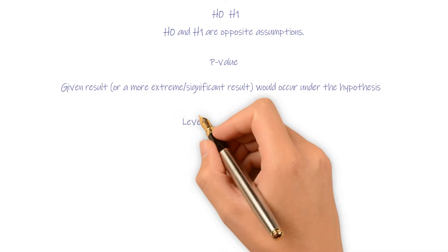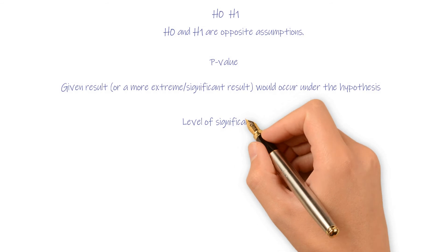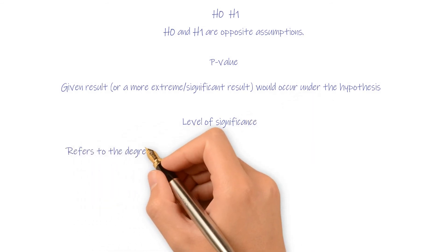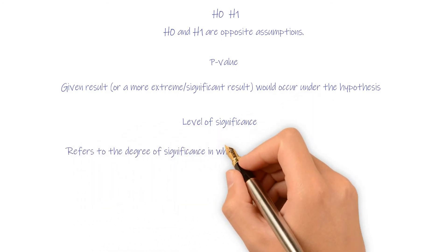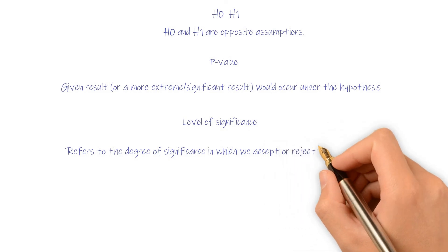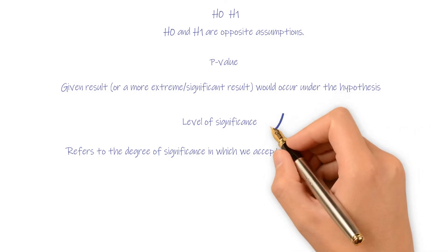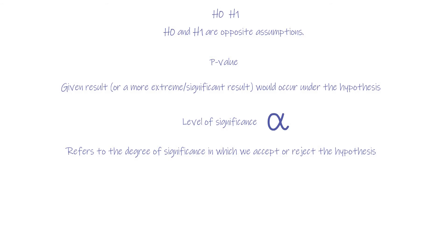Level of significance refers to the degree of significance in which we accept or reject the hypothesis. The significance level is often referred to by a Greek lowercase letter alpha. As just mentioned, a common value used for alpha is 5%. A smaller alpha value suggests a more robust interpretation of the hypothesis.